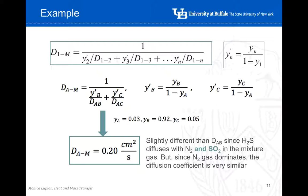Comparing this result with section B, the diffusion coefficient of H₂S in pure nitrogen was 0.207 cm² per second, while the diffusion coefficient in the gas mixture is 0.20 cm² per second — very similar values. The small difference arises because in section C we also account for SO₂. The values are close because nitrogen is the predominant species at 92% of the mixture. Thank you.